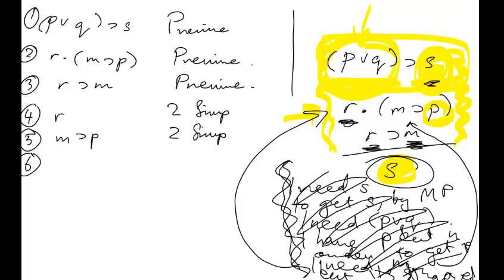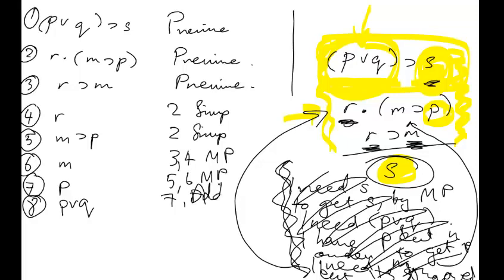Line 4, R, from line 2, simplification. Line 5, M→P, from line 2, simplification. Line 6, M. How did I get that? From line 3 and 4, modus ponens. I'm going to fly through this and then talk you back through it. So line 7, P, from line 5 and 6, modus ponens. Line 8, P∨Q, from line 7, disjunct addition. Line 9, S, from line 8 and line 1, modus ponens. Game over. That's the proof.